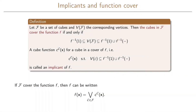We will now look at function cover and implicants. Let f be a set of cubes and let v of f be the corresponding vertices for these cubes. The cubes in f will cover the function f if and only if the onset is a subset of v of f, and v of f is in turn a subset of the union of the onset and the don't care set.